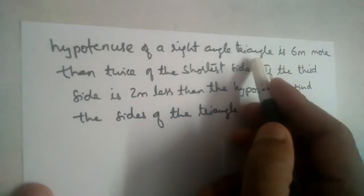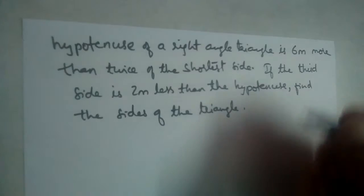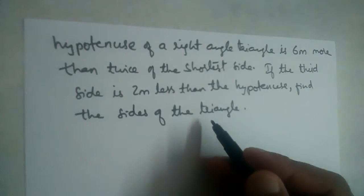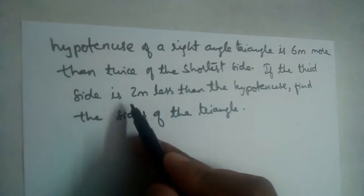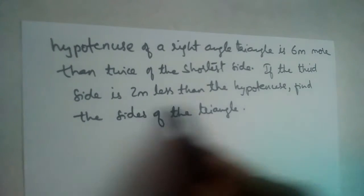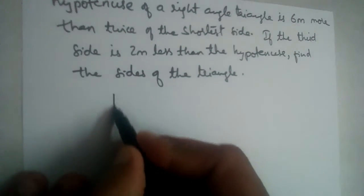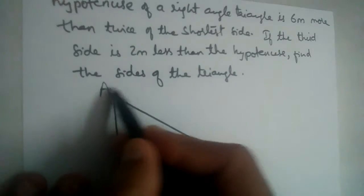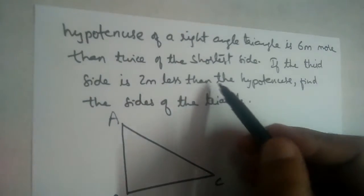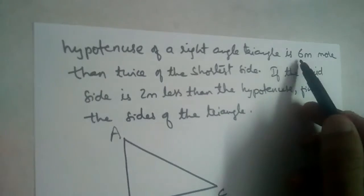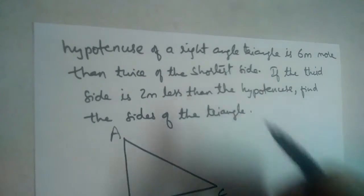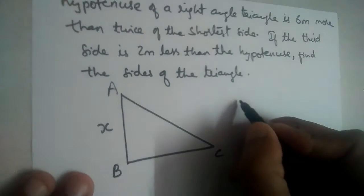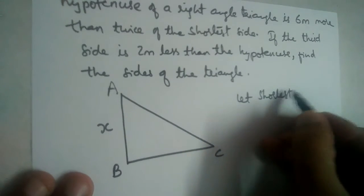The hypotenuse of a right angle triangle is six meters more than twice the shortest side. If the third side is two meters less than the hypotenuse, find the sides of the triangle. Let us draw a right angle triangle and name it ABC. The hypotenuse is six meters more than twice the shortest side. Let the shortest side be AB.